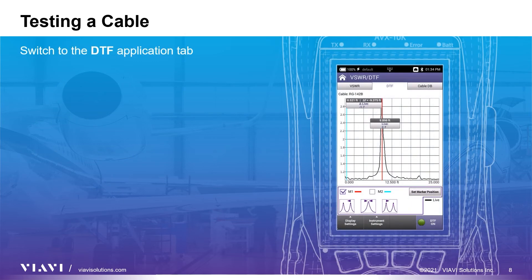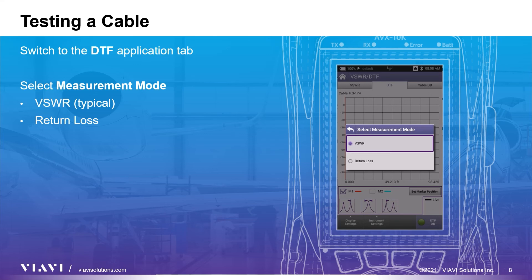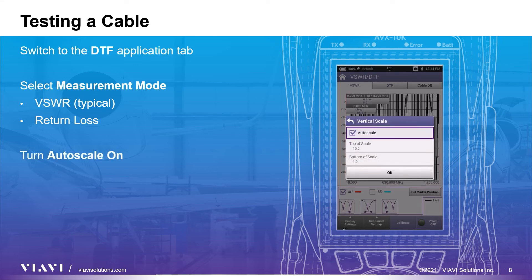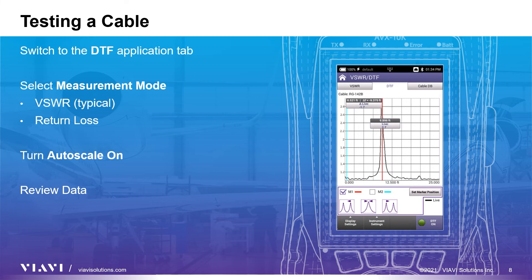Please see the manufacturer's specifications for tolerances. This application can also help determine faulty cables or connections. Click on the DTF tab. Connect your cable under test directly to the SWR port on the AVX10K, and for best results set measurement mode to VSWR and turn Vertical Auto Scale ON. If you have an open or short in the cable, it will look similar to this.